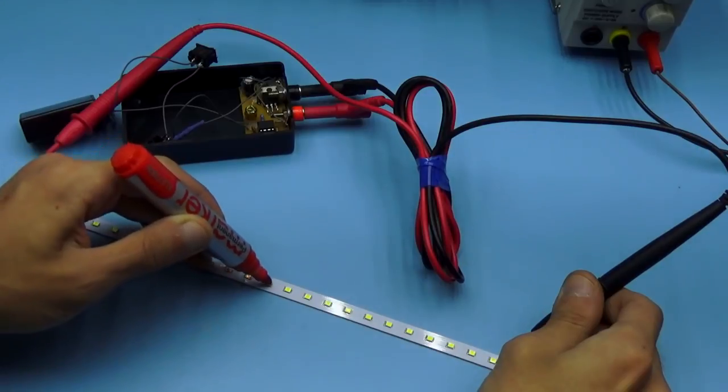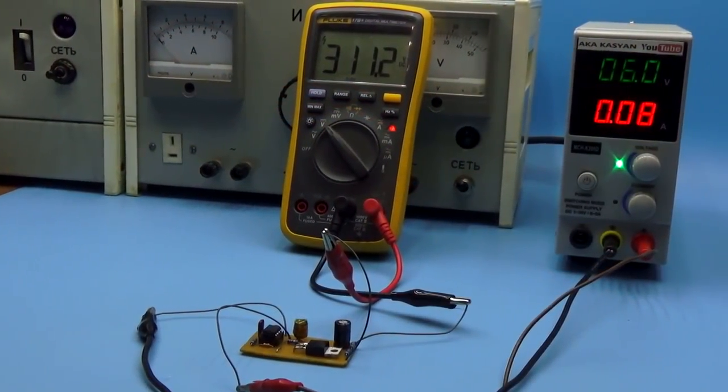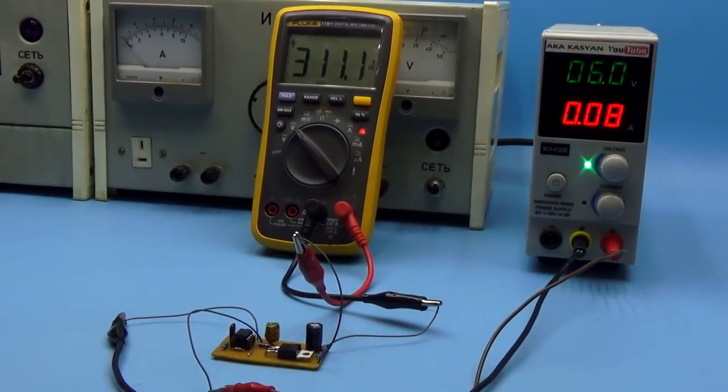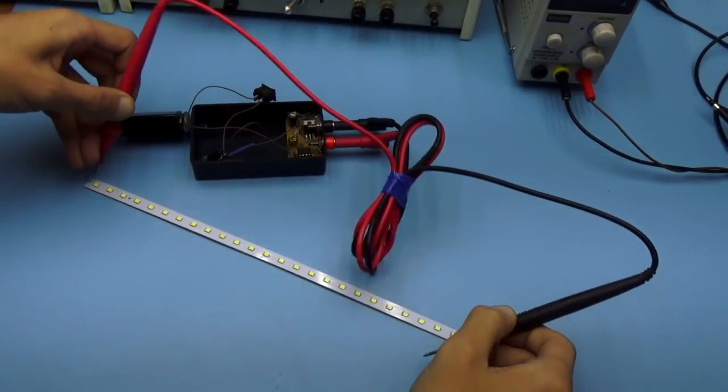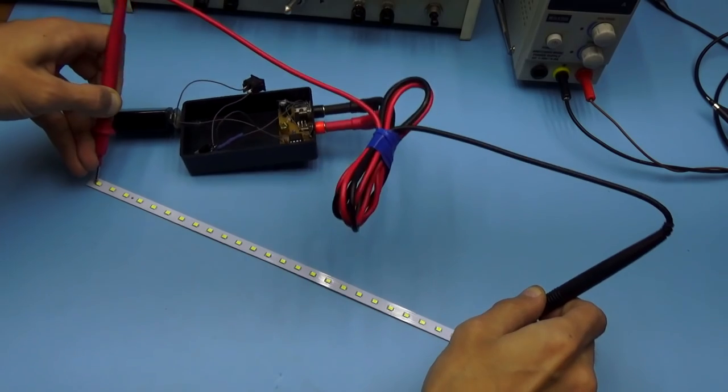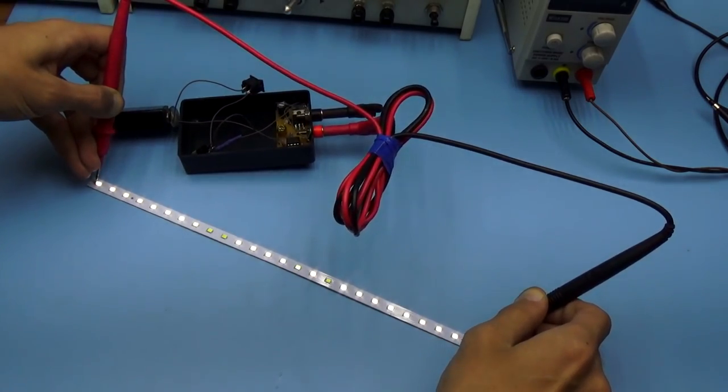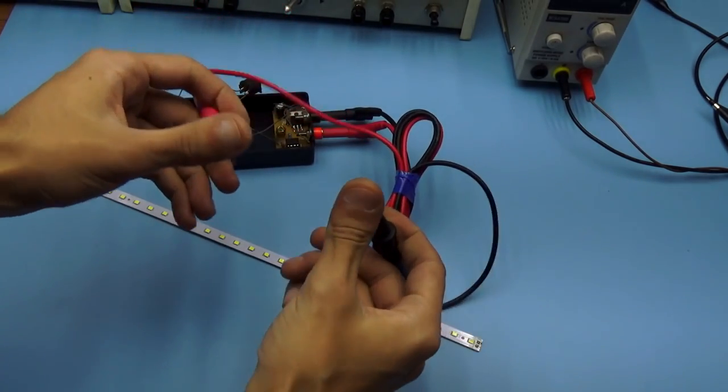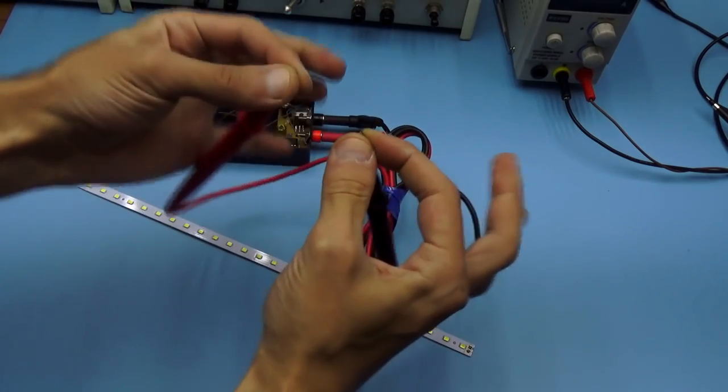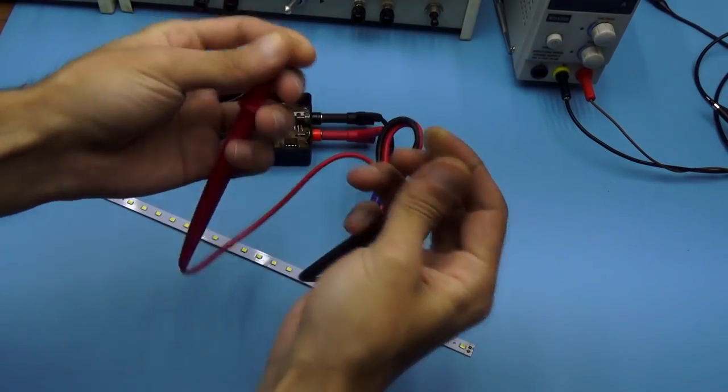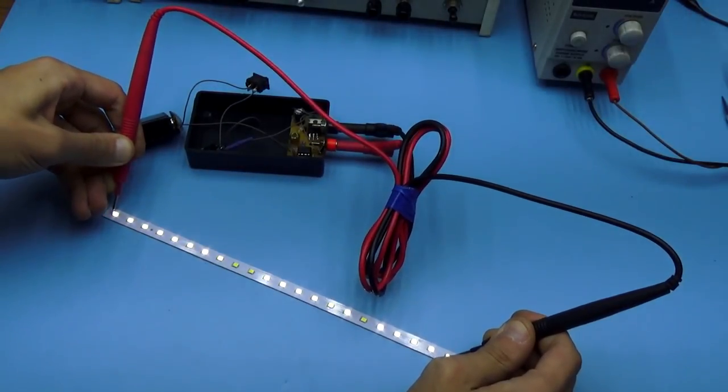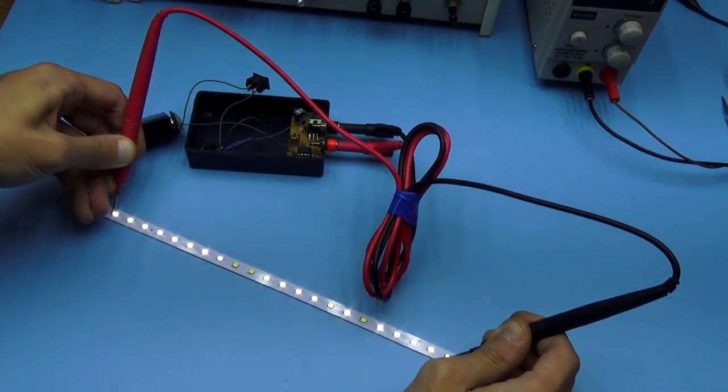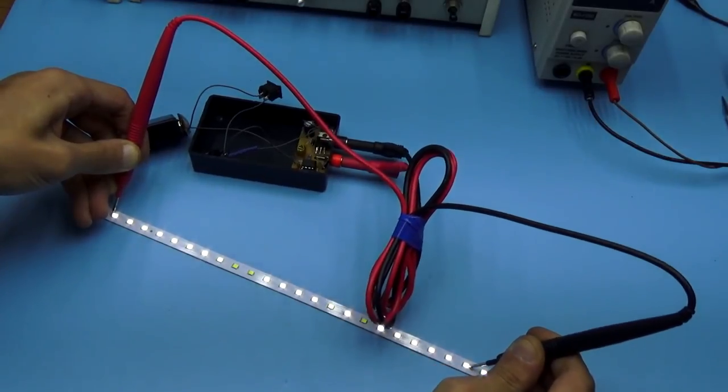The presented device provides constant voltage of about 320 volts and insignificant current at the output. The device has no connection with the mains and is completely safe even if you touch the high voltage contacts during operation. It allows you to check circuits of more than 100 series-connected LEDs.